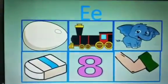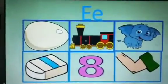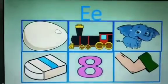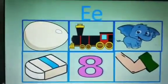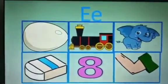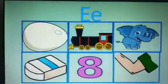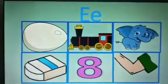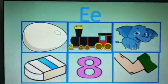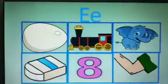Now let's discuss some things that come from the sound E. Egg, engine, elephant, eraser, elbow.